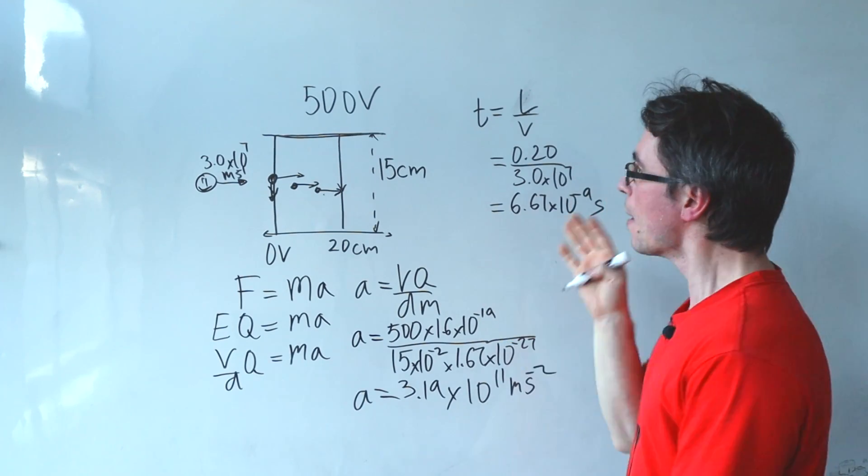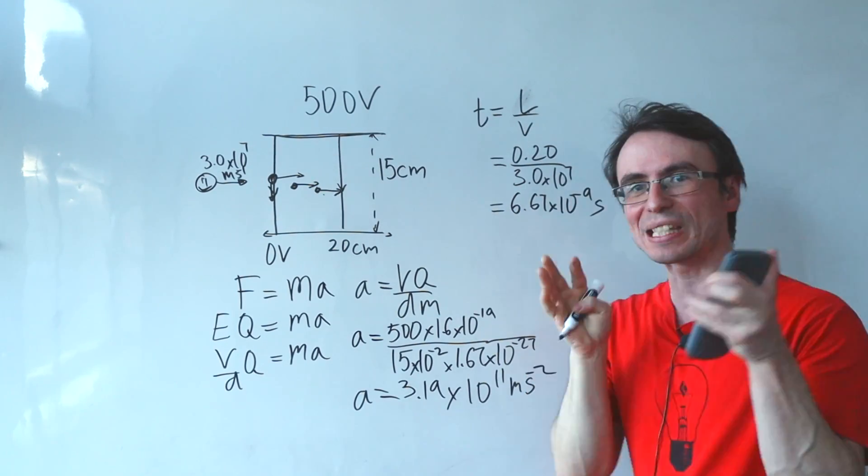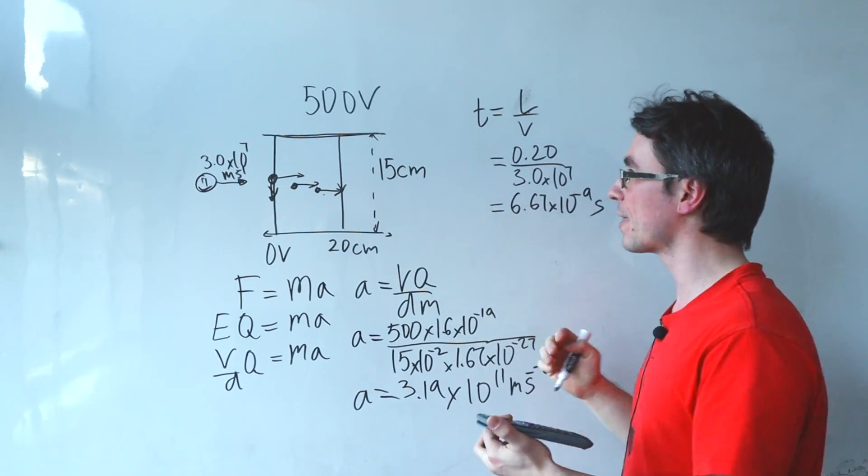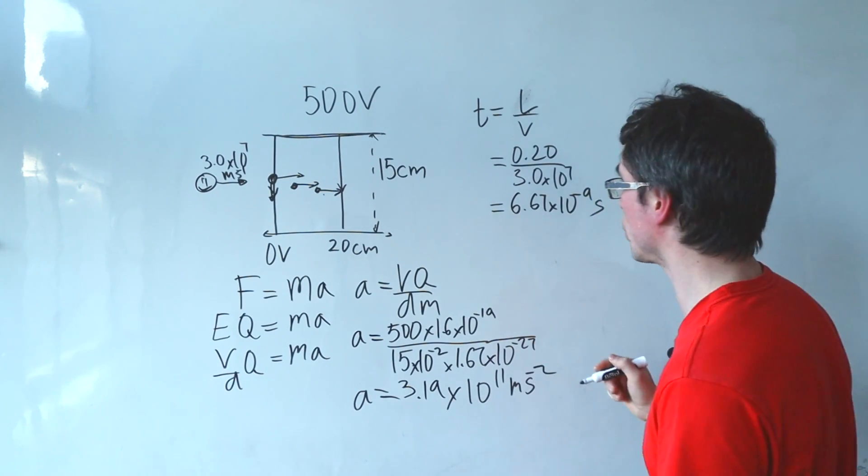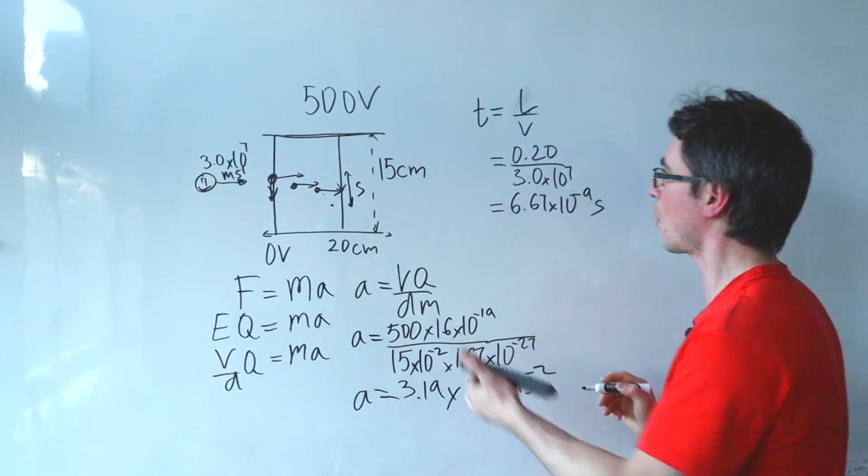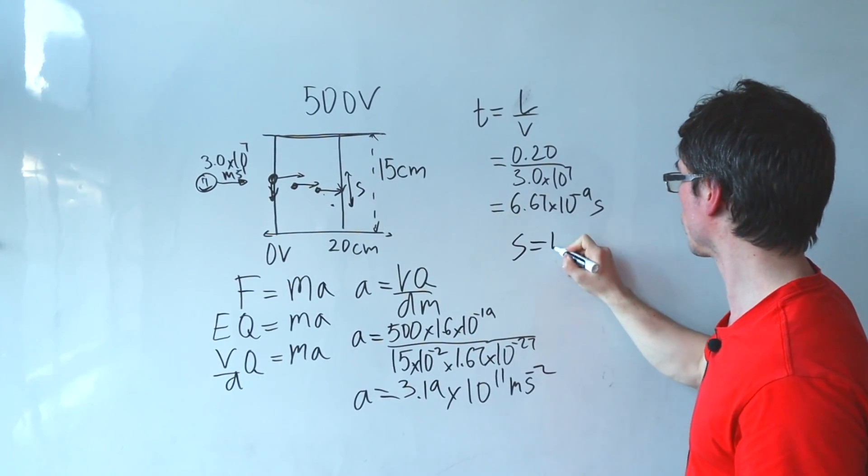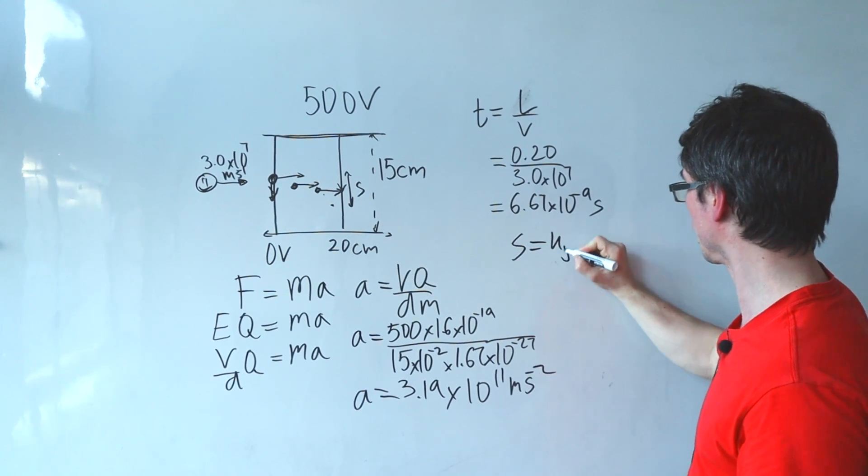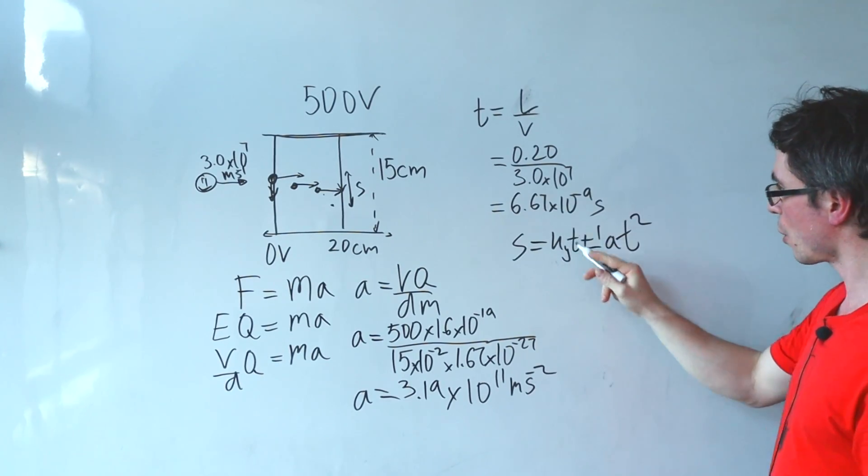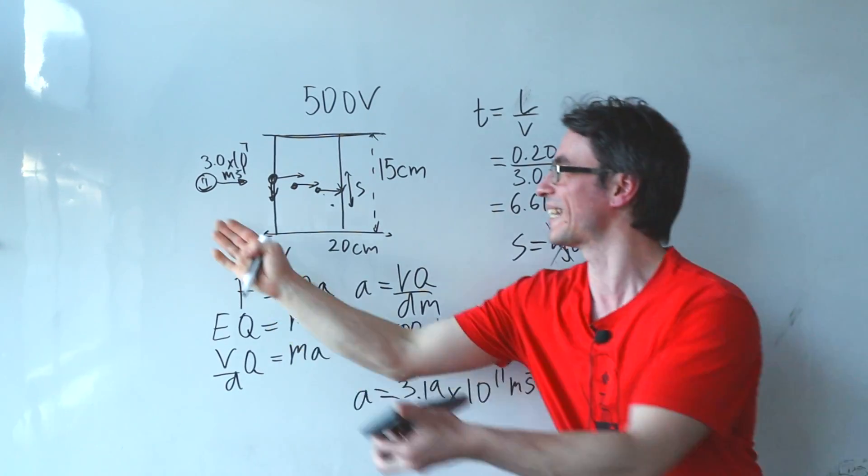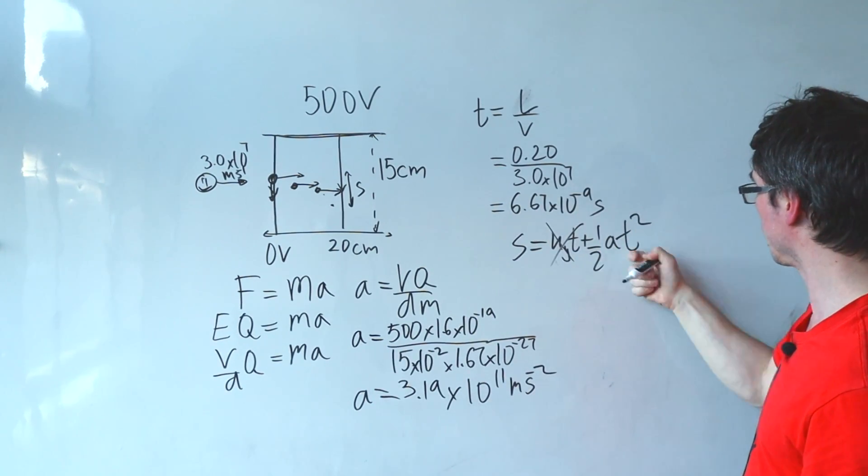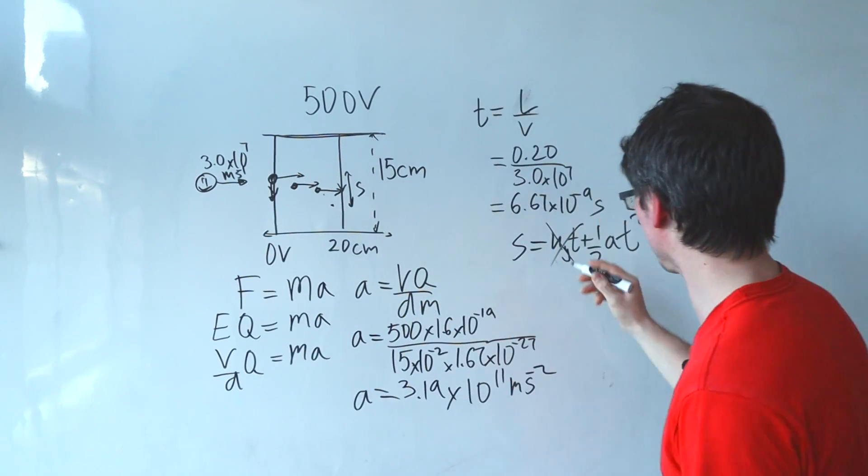Well let's calculate, because the proton experiences a constant acceleration within the plates, then we can just use the SUVAT equation and shall we just say that the total vertical deflection, should just call it S, will be equal to the initial vertical speed that's in the y direction multiplied by the time plus a half a t squared. So the initial vertical speed is just zero, it is entering purely horizontally, and we know what the acceleration is, we know what the time is, we can calculate our deflection.